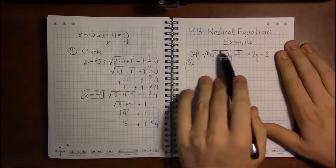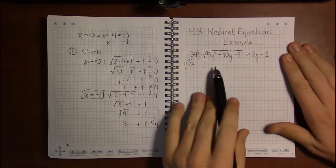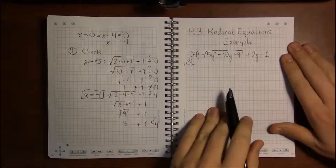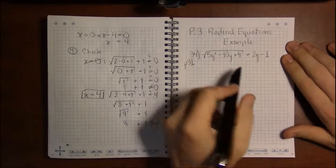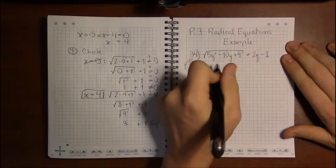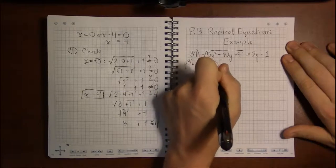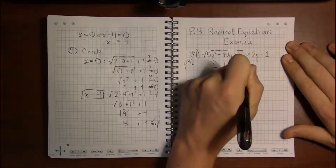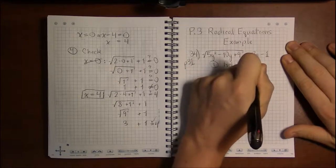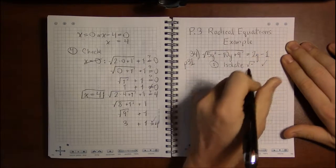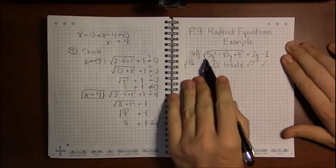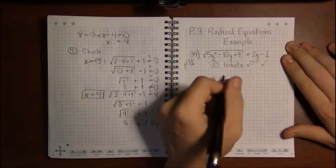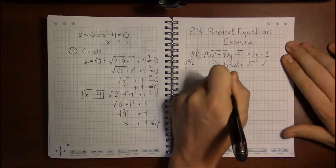Alright, let's go over some examples of radical equations. I'm looking at problem 34 on page 31, and in this instance, our first step of getting the radical by itself, or isolating the radical, is already done for us. The square root is all by itself on the left-hand side. So our next step is to get rid of the square root.